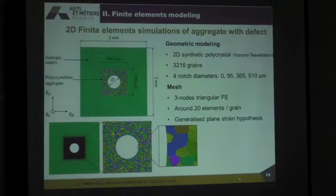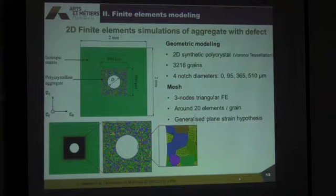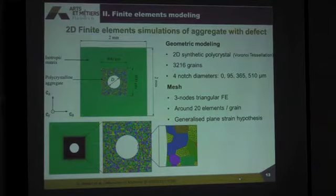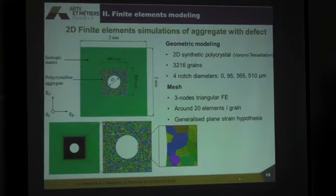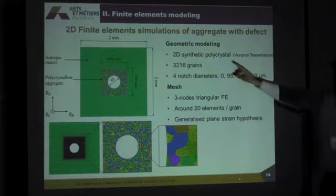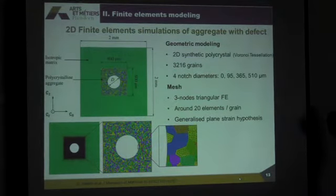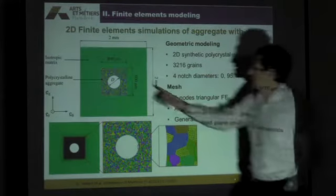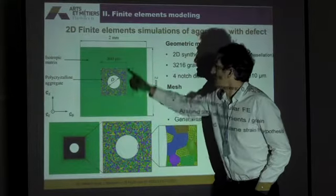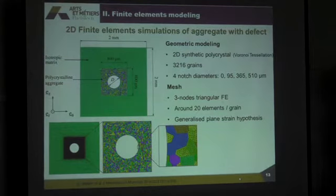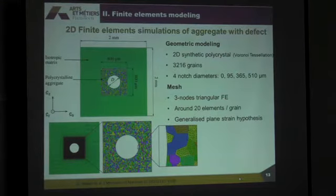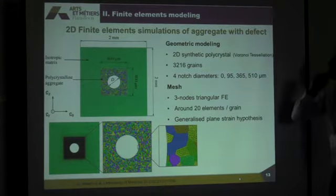Now let's talk about how I'm going to model the microstructure. I'm going to do something that is very simple — I'm going to generate two types of models: the 2D model and the 3D model. I will use Voronoi tessellation to generate a synthetic polycrystalline aggregate that you can see here, embedded into an isotropic matrix.